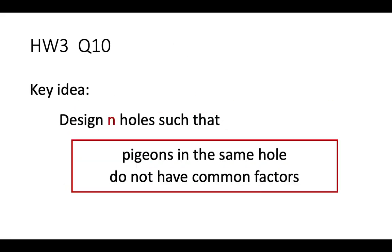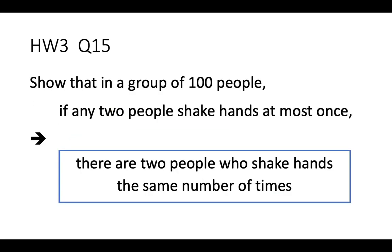Now, question 15. In a group of 100 people where any two people shake hands at most once, the number of times a person shakes hands can range from 0 to 99. So there are 100 possible handshaking counts. But we also have 100 people, so naively applying Pigeonhole Principle with 100 people and 100 choices gives no guarantee that two people have the same count.